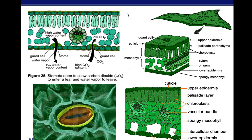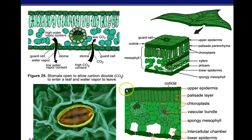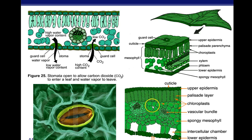This should be a review. The cuticle is the outer waxy covering that prevents water loss. We have the epidermis, which doesn't have very many chloroplasts — it's basically the skin of the plant, protecting from disease. The mesophyll is the important part of the plant where photosynthesis occurs. Palisade mesophyll and spongy mesophyll both have the most chloroplasts.